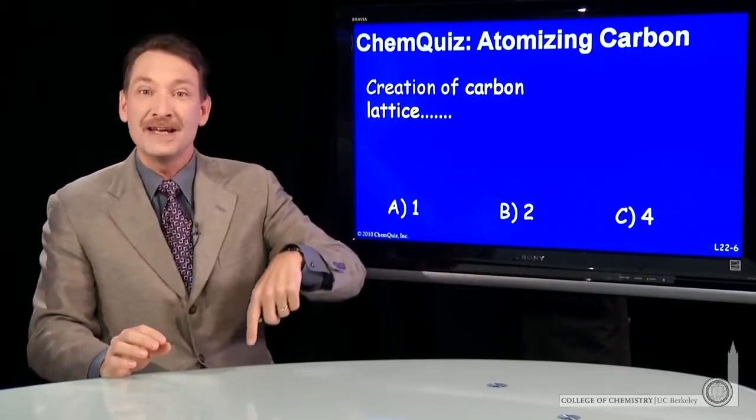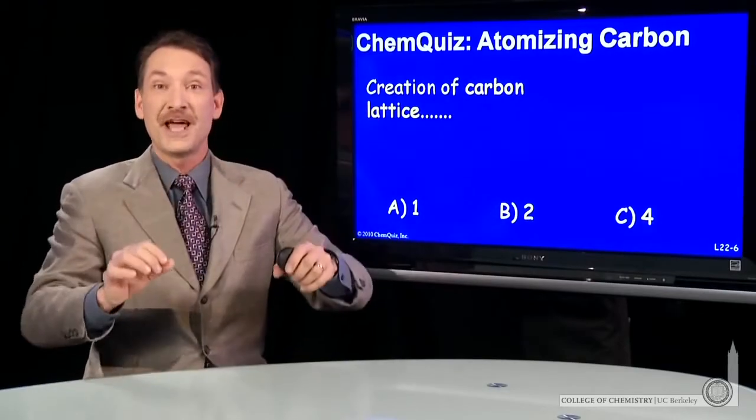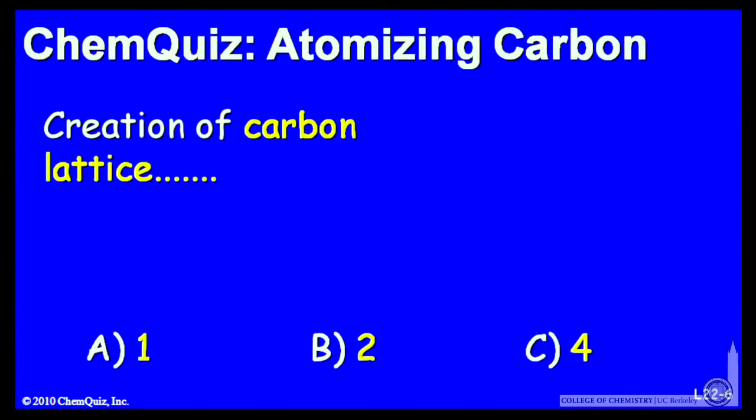So what would it take to create carbon lattice from carbons that are just atoms? How would I build it up? Well, here I'll take a carbon atom and two bonds, and then take another carbon atom and add two bonds, and take another carbon atom and add two bonds. And I'll keep doing that, and I think you can see for each carbon atom I add to the lattice, I need to make two bonds to continue the lattice.